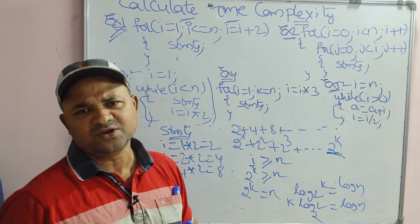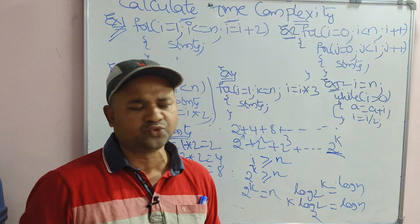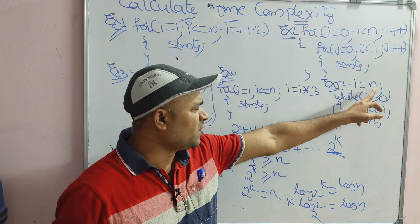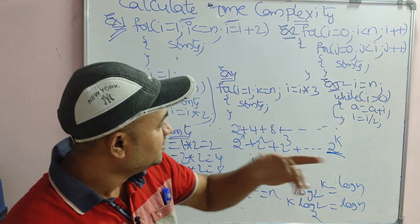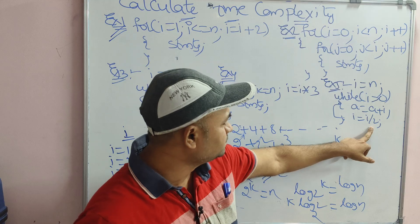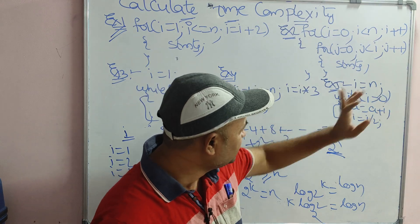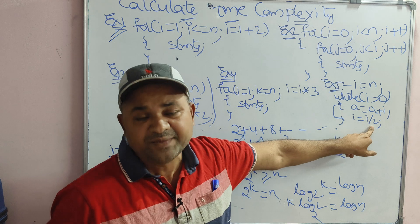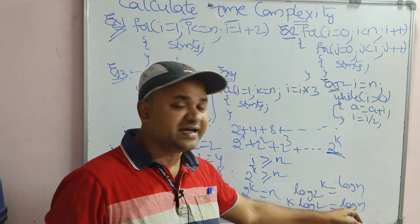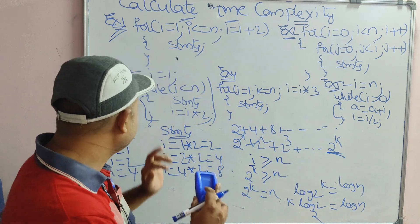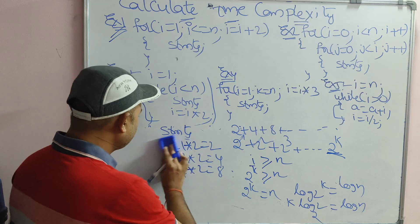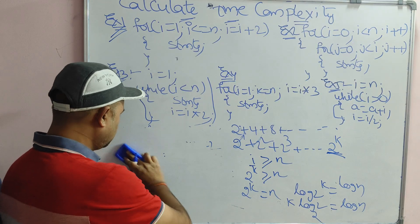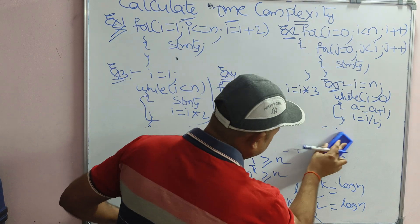So if you don't know n value and i is equal to i into 2, then the time complexity is log n. Similarly, i equal to i by 2 also gives time complexity of log n, since division also produces O(log n).